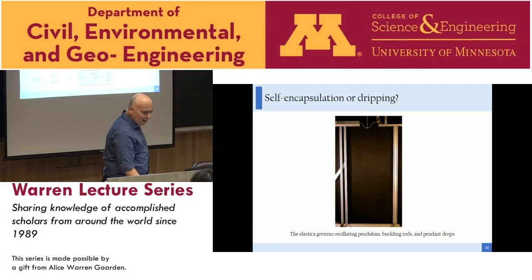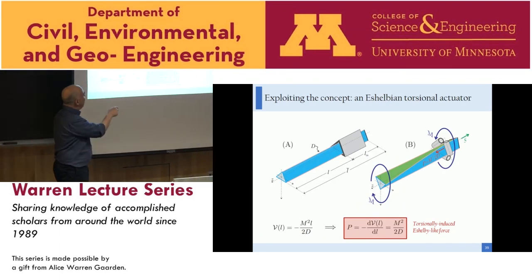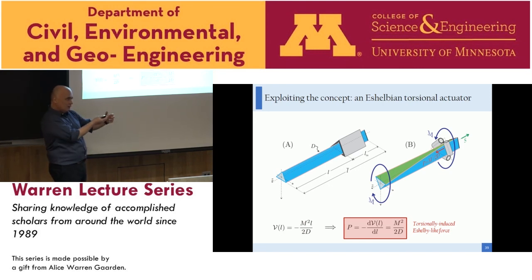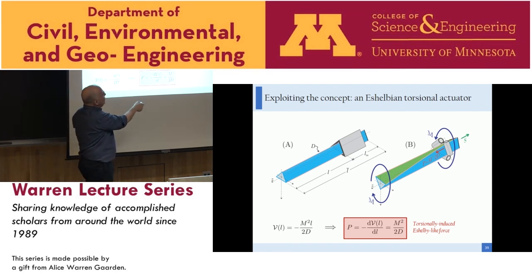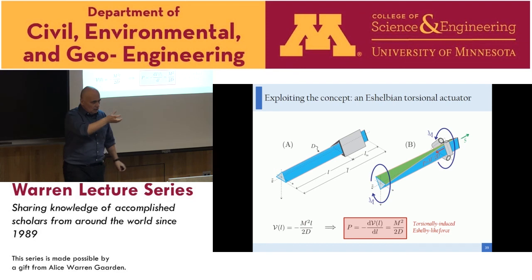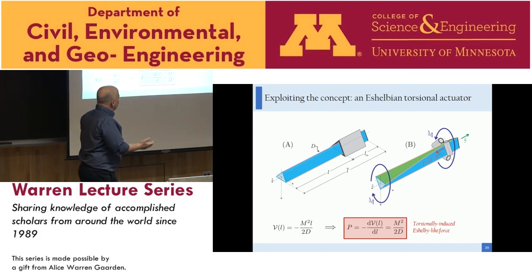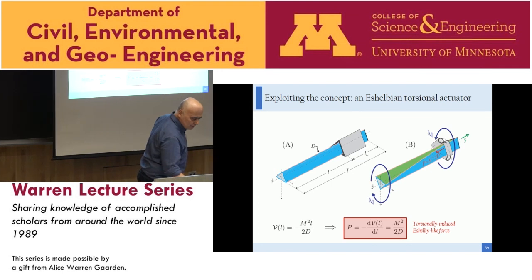Another idea was to find the same effect under torsion. With a sliding sleeve that resists torque — simply realized with three rollers — and applying a torque, the same argument holds. The elastic energy is M squared L divided by 2D, where D is the torsional stiffness. Taking the derivative gives the Eshelby-like force. We moved to the lab and built our own experiment, loading with torque by filling a container with water and measuring the axial load with a load cell.